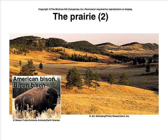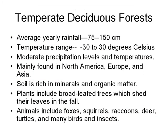Typical grassland plants include many grasses and herbs but very few trees. Typical animals include coyotes, badgers, mule deer, rabbits, prairie dogs, bison, and many birds and insects.